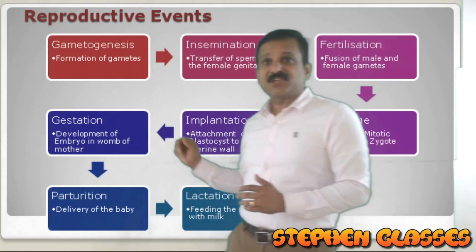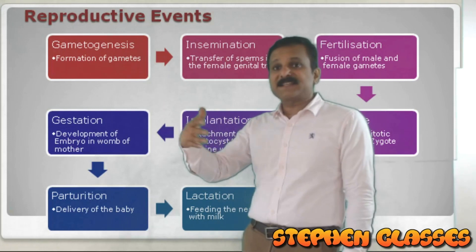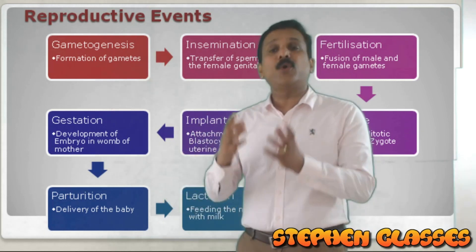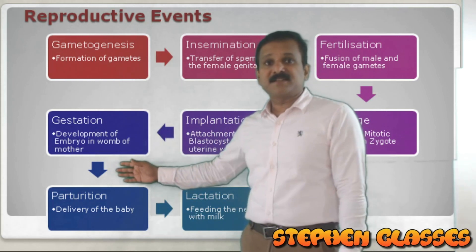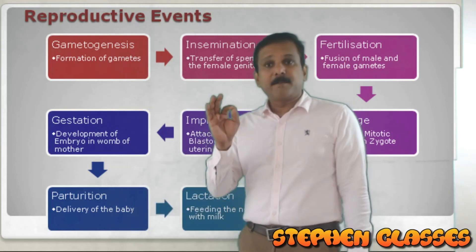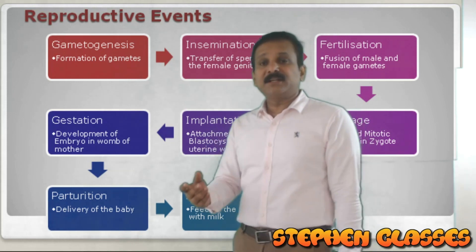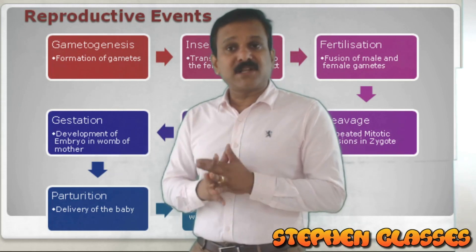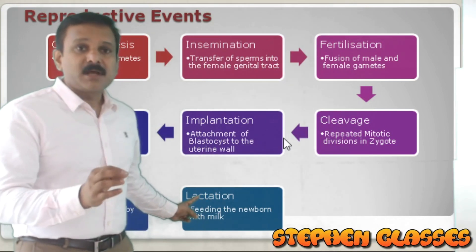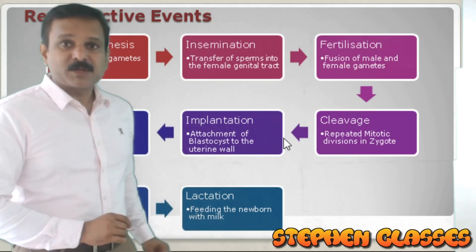So after gametogenesis, insemination, fertilization, cleavage, and implantation, there is gestation — the embryo is developing inside the mother. The embryo will transform into a fetus with all organ systems developed. The fully developed fetus will be delivered out, and that process is called parturition — the delivery of the baby. After delivery, the mother will feed the newborn with milk produced from the mammary gland, and that last step is called lactation.